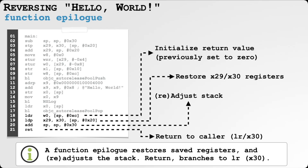Finally, we have the function epilogue. This restores the two registers that were saved to the stack, readjusts the stack, and returns to the caller. The return instruction reads the address stored in X30 (the link register) and jumps back to it. The epilogue also initializes the return value so the caller can examine it.